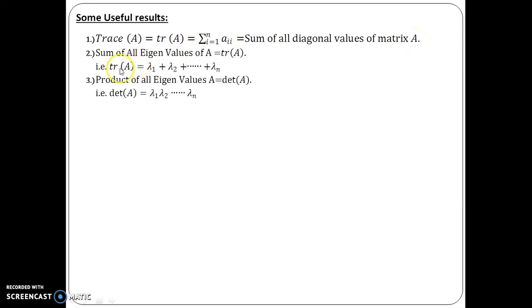Now, there is a connection between the trace and the eigenvalues. That is, if you add up all the eigenvalues of a particular matrix A, then it is nothing but the trace of that matrix. And if you take the product of all the eigenvalues, it is nothing but the determinant of that matrix.